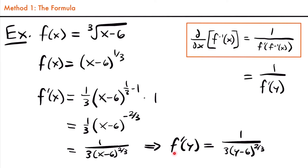Now that we have f prime of y, we can plug that into our formula: one divided by that function. Basically, we're taking the reciprocal of this fraction, flipping the numerator and denominator. So we're going to have three times y minus six to the two-thirds power divided by one. Since this is one divided by f prime of y, that's just the reciprocal of that function, so we flipped it.